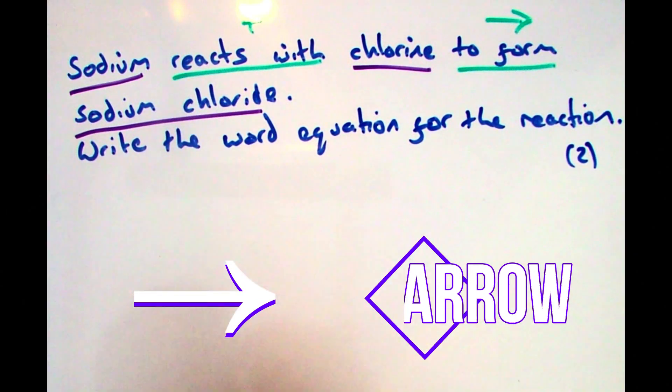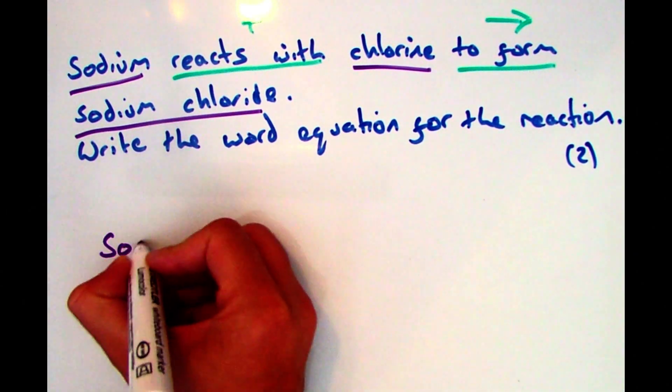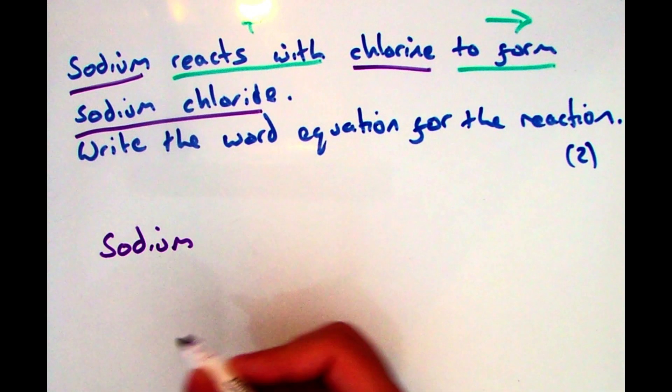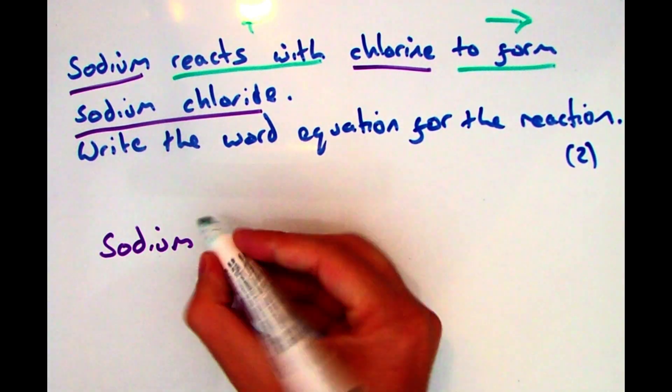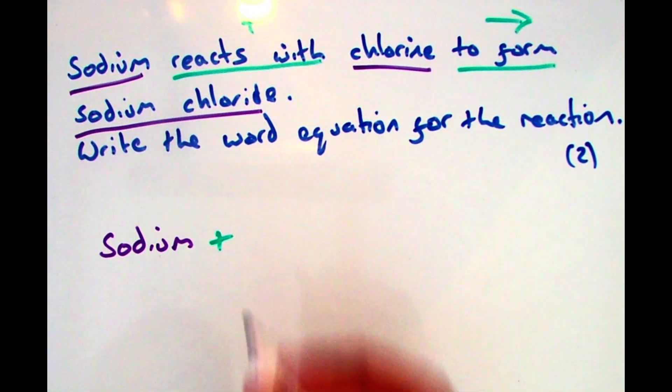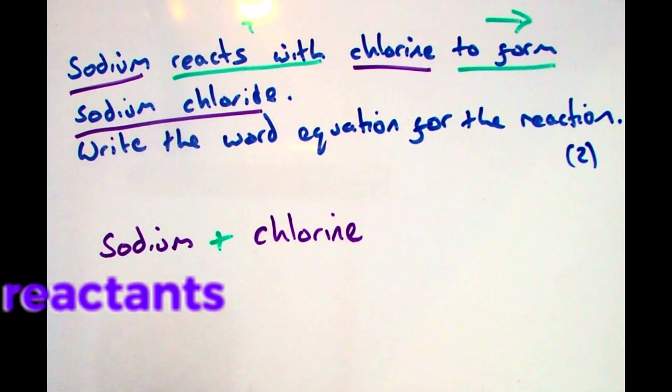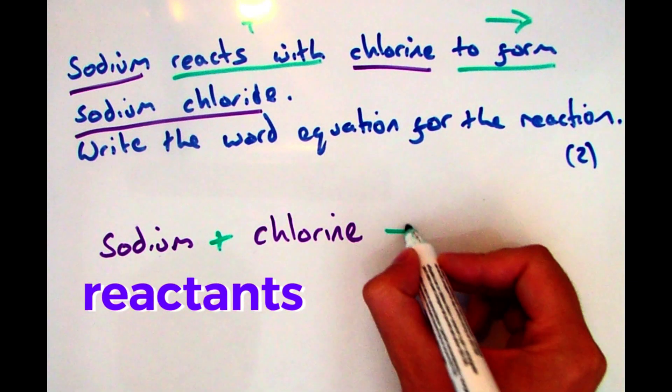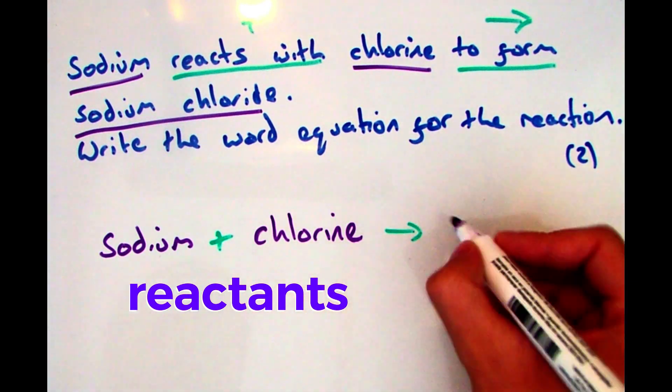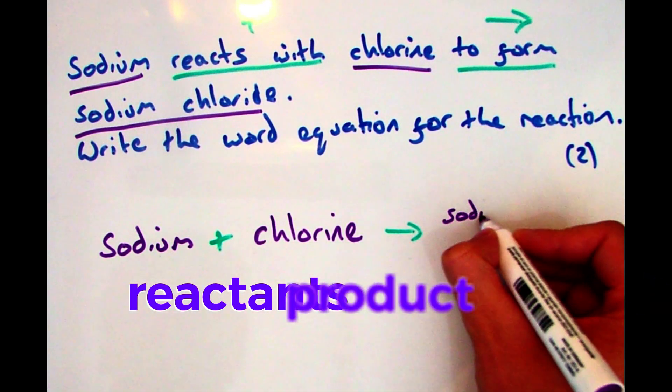Now in this case I've only got one product so I don't need to worry about that. So I can now make my word equation. It tells me sodium, I'll put that at the top there, reacts with, so I'll put my plus in. Chlorine, so they're my two reactants. To form, which means I put my arrow in. And then I've just got the one product which in this case is sodium chloride.